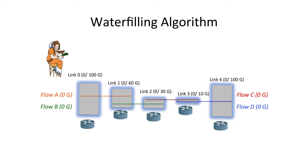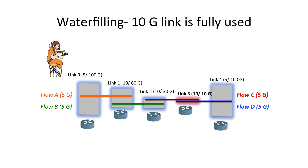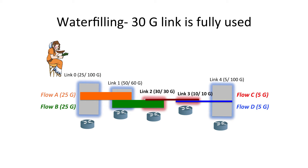A standard technique for computing maximum fair rates is called the waterfilling algorithm. Here I have that network — the gray boxes are the links, and the colored ones are the rates the flows are getting, with height proportional to link capacity or flow rates. I start with zero allocation for all flows and increase them at the same rate until some link gets fully used up, like link three. The flows going through that link are bottlenecked there, and I continue increasing allocation for other flows until every link is fully used, then simply read out the fair share rates.